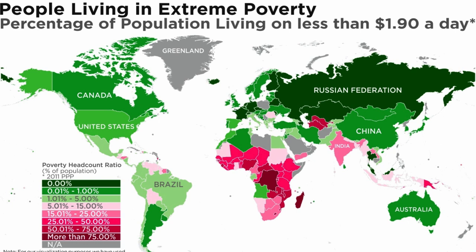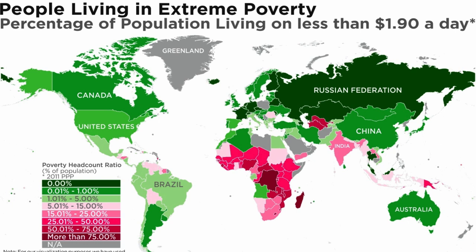The poverty head count ratio at national poverty line, as a percentage of population, in South Africa was reported at 22% in 2008, according to the World Bank.